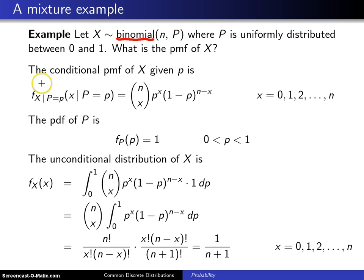The way this is handled is the conditional probability mass function of X given P is binomial. So f of X given P equals little p is n choose x,